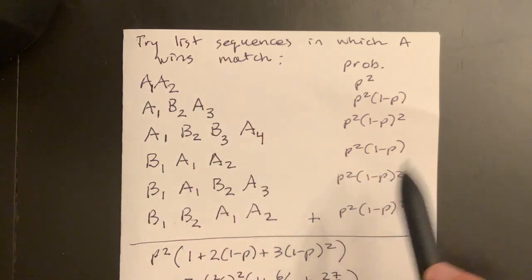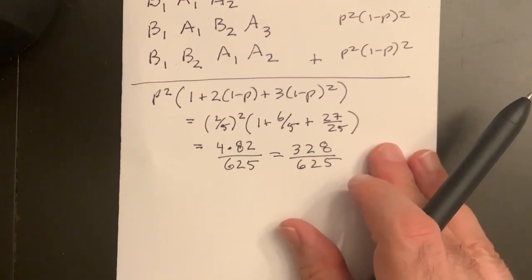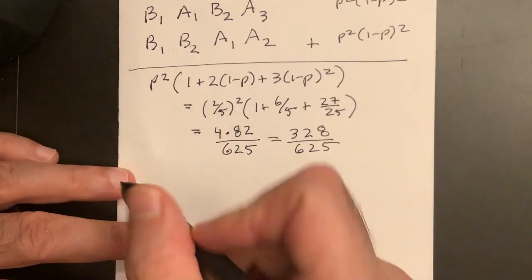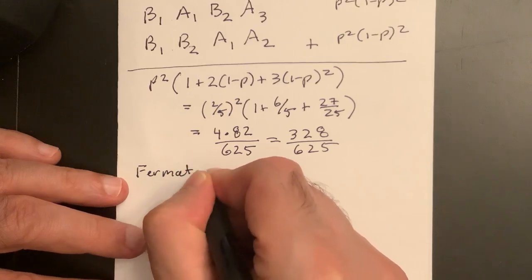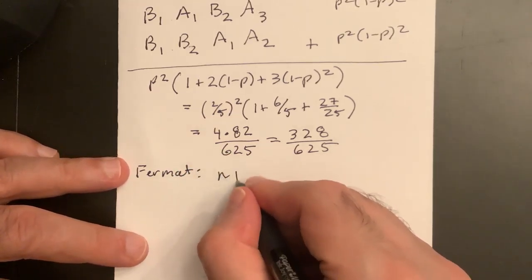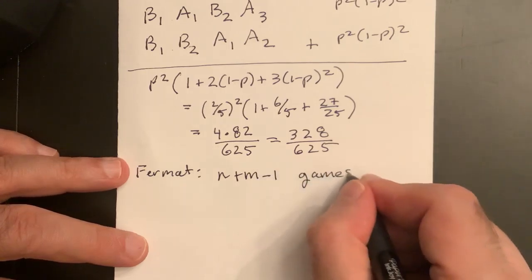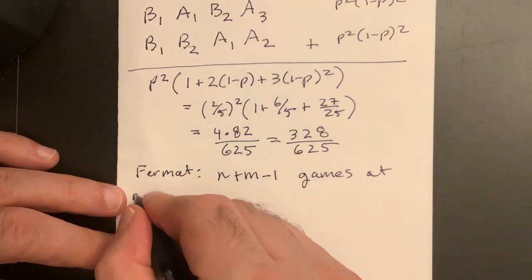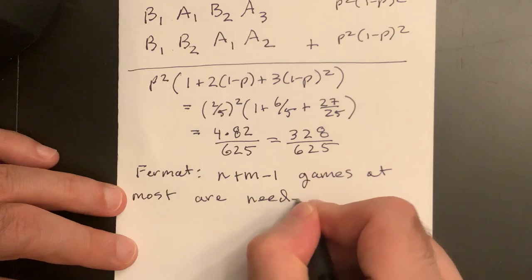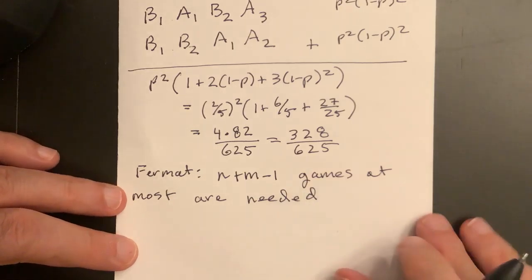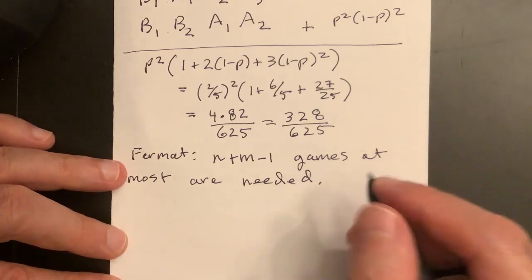But this is getting toward the idea of the other solution, the so-called Fermat solution. So Fermat said, n plus m minus one games at most are needed. This is if A needs n and B needs m. And he says compute the probability, play all the games.